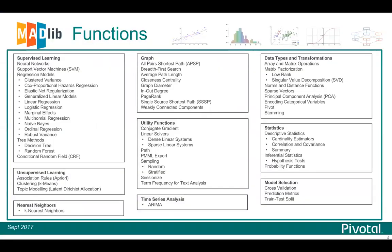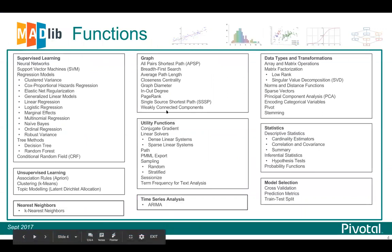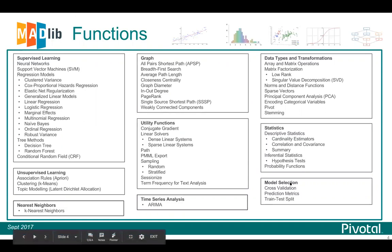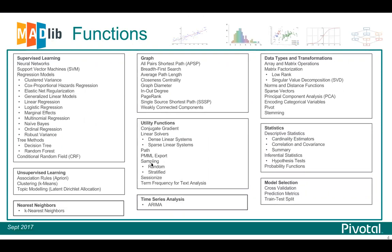To conclude, I will leave you with a look at the main functionality in Madlib and highlight the ElasticNet function and the supervised learning algorithms, graph algorithms, model utility functions, and data utility functions such as the summary function, pivoting, encoding categorical variables, and sampling — all of which augment what Greenplum already provides.